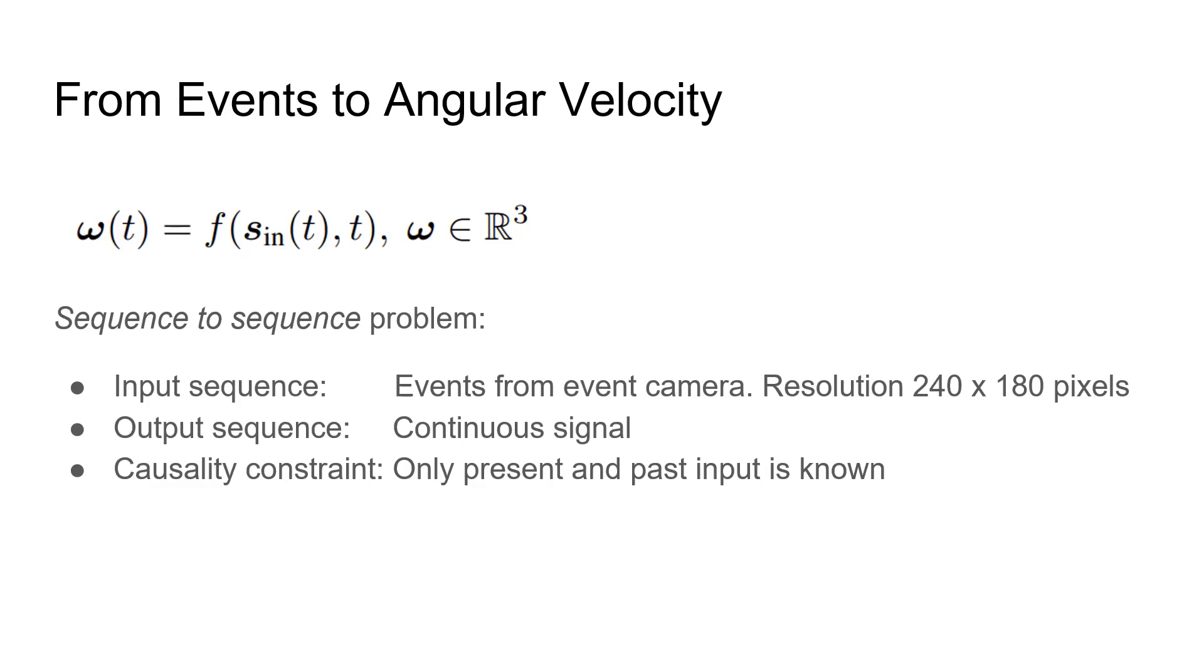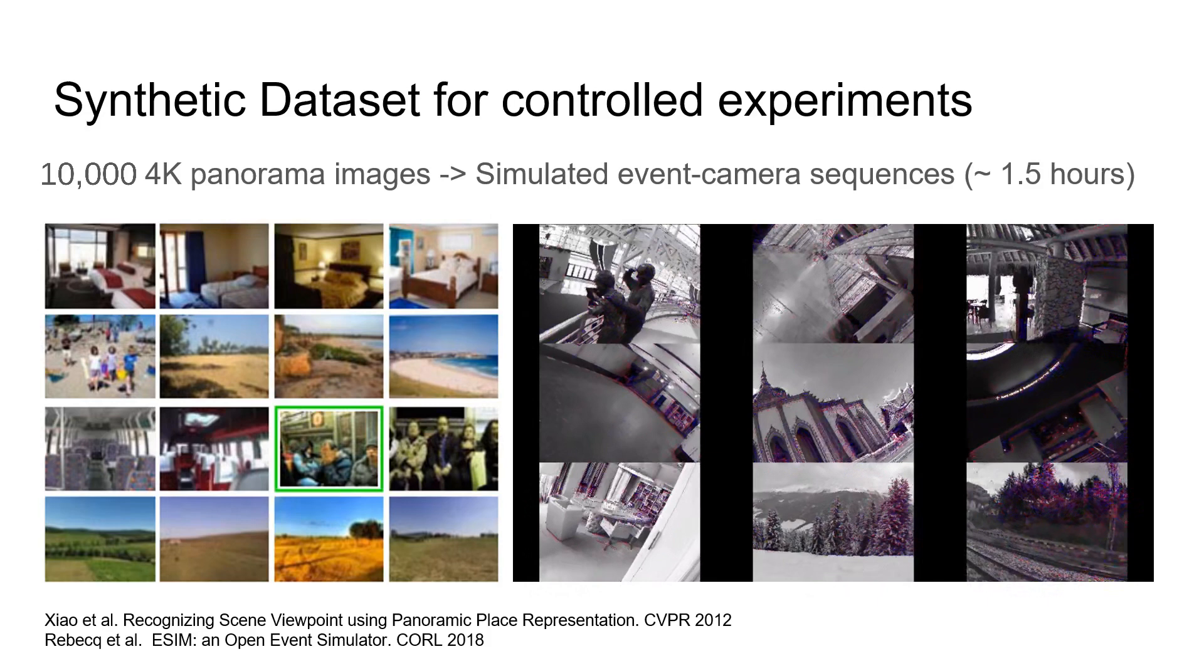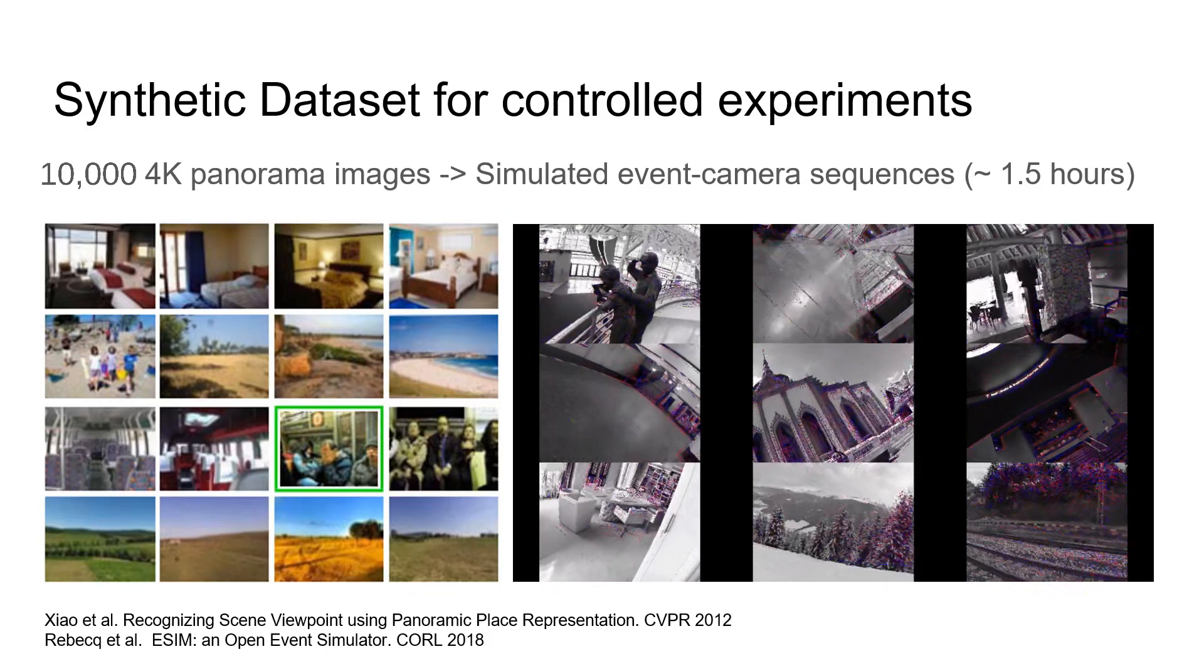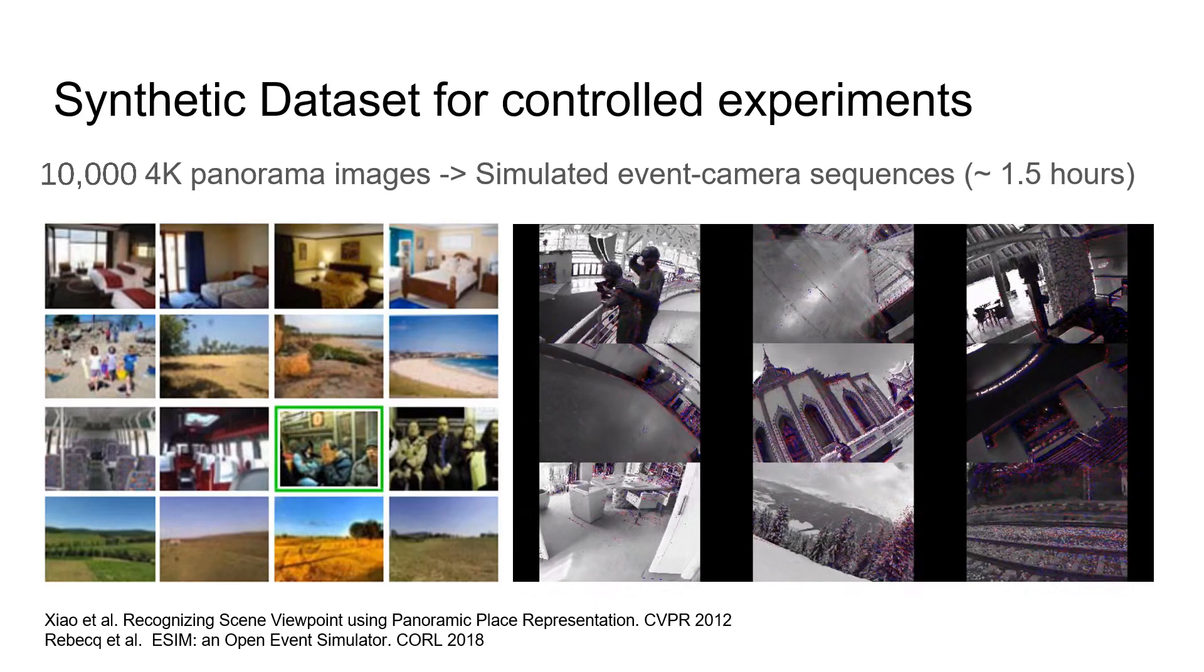We take a data-centric approach and generate a large-scale synthetic dataset with accurate ground truth. The event camera is randomly rotated within thousands of different panoramic scenes. The resulting one and a half hours of event data is later used to train a convolutional spiking neural network.